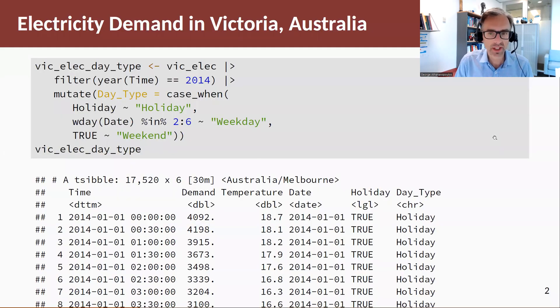Let's have a look at an example. We're going to go back to the Victorian electricity demand tsibble and we're only going to extract year 2014. Remember this is half hourly data and we're going to do a little bit of a trick here. Remember that in this tsibble we get demand, temperature, but we also get the holiday, whether there's a holiday or not on that day.